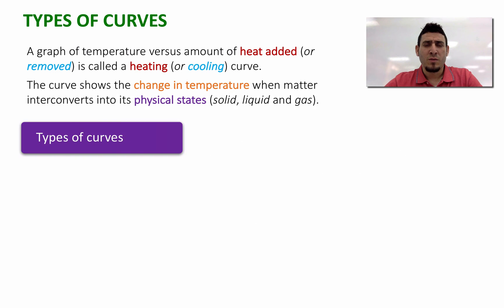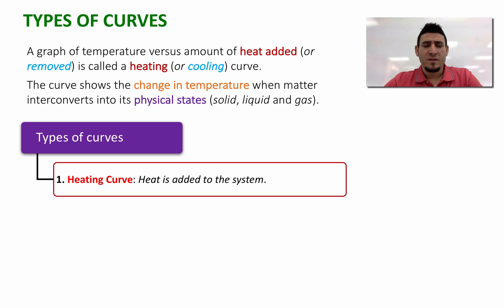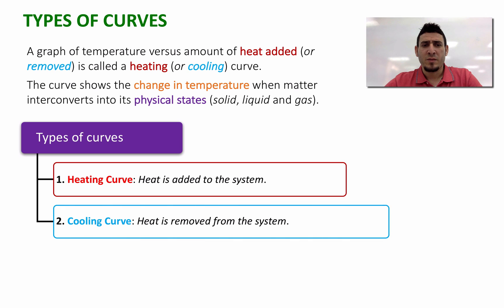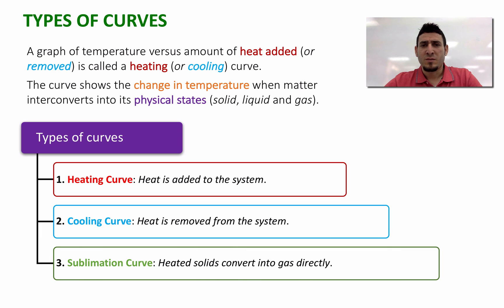In this video, I'm going to talk about three types of curves. The first one is the heating curve, when heat is added to the system. The second type is cooling curve, when heat is removed from the system. And the third type is the sublimation curve, when heated solids convert into gas directly.